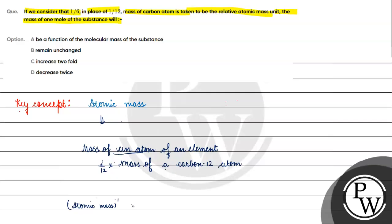So the new atomic mass equals mass of an atom of an element divided by 1/6 of the mass of the carbon atom.